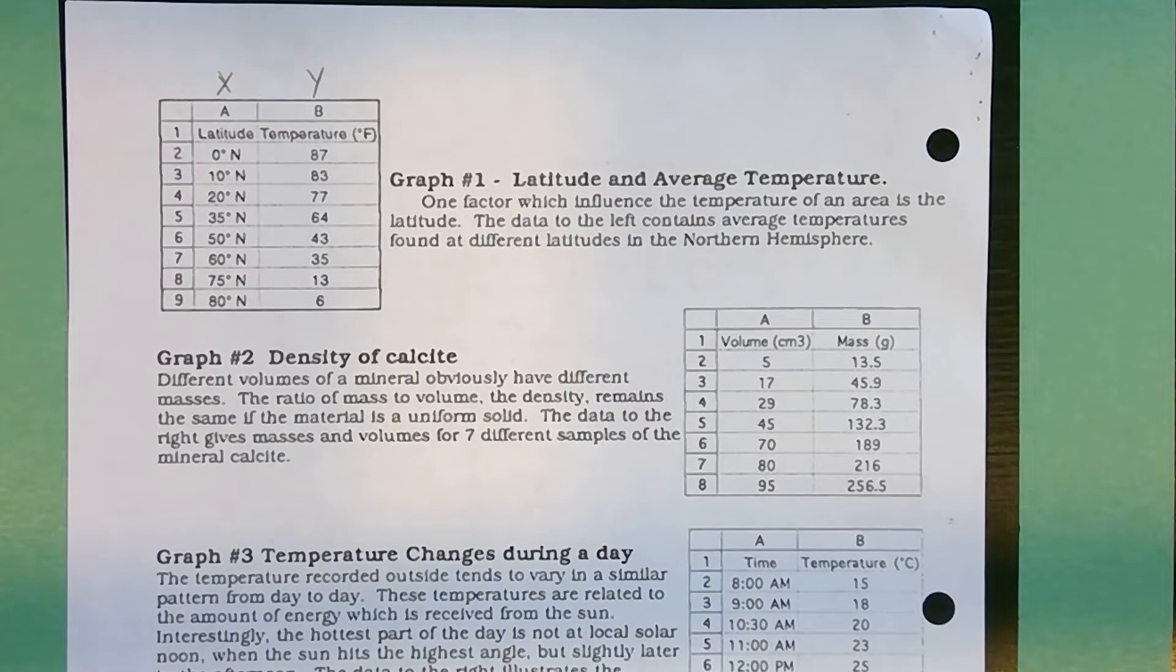When you look at them, the first column is going to be the independent variable. So the independent variable is always plotted on the x-axis and then the dependent variable gets plotted on the y-axis. What are the two factors that determine what your scale is going to look like? One of them is obviously the numbers that you're trying to graph. The first one, your latitude is going from 0 to 80, so you have to cover those 80 things.